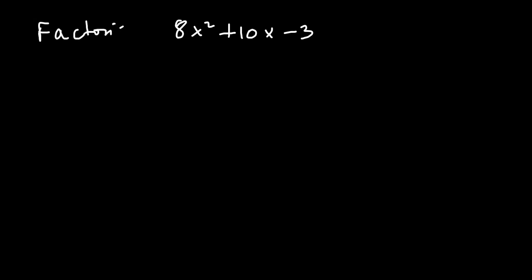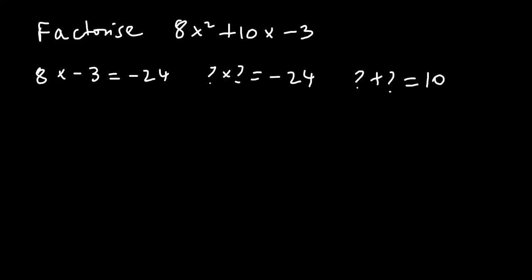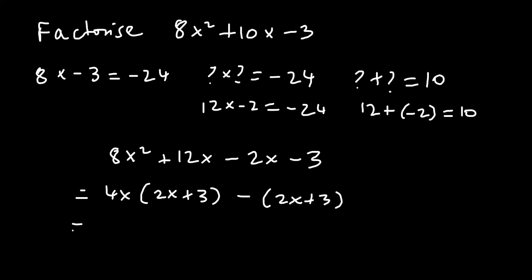Factorize 8x squared plus 10x minus 3. We have 8 times minus 3 is minus 24. We're looking for two numbers that multiply to give minus 24 — remember, it's always this product for these types, not just the last number — and add to give the middle term, 10. I can see 12 times minus 2 is minus 24, and 12 plus minus 2 is 10. Split the middle term: 8x squared plus 12x minus 2x minus 3. That factorizes to 4x times 2x plus 3, minus 1 times 2x plus 3, giving 2x plus 3 times 4x minus 1.